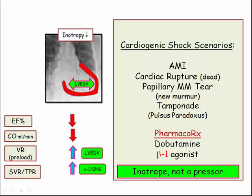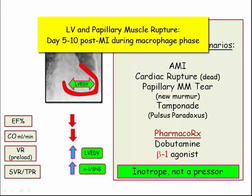The other scenarios associated with cardiogenic shock include LV rupture. Remember, that occurs on days 5 to 10 post-MI during the macrophage tissue response. A patient with LV rupture is not apt to survive, and the test questions will focus on cardiac pathology of acute MI, covered in a separate video presentation.